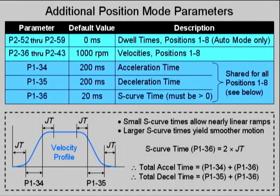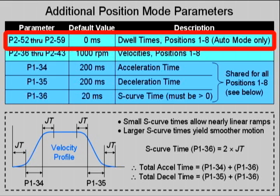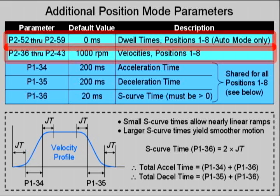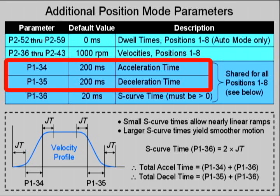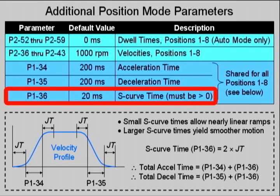The SureServo also supports automatic positioning with either absolute or relative moves, with preset dwell times for each position. In this entire example, we've been using the default speed and acceleration values in the drive. The SureServo allows a separate velocity value for each of the eight moves. Separate acceleration and deceleration values are shared for all the moves. The drive even supports S-curve acceleration and deceleration for smooth starts and stops. See parameter P136 for more information.